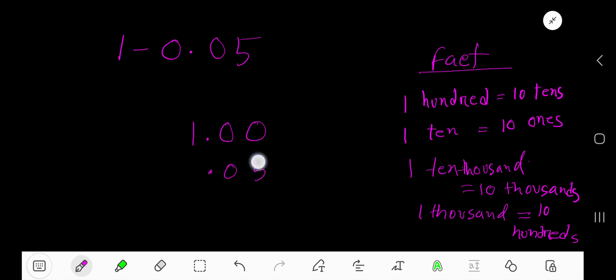Now line up the decimal and write the zeros. Now subtract. This is the ones column, this is the tens column, this is the hundreds column. Take away five from zero - you cannot do this, so you need to go to the next column. But you cannot borrow from zero, so go to the next column.